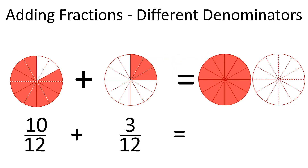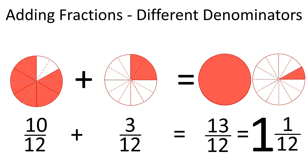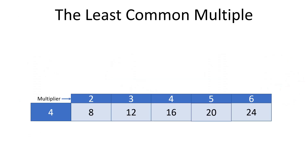And that we can write as a mixed number of one and one-twelfth. To find a common denominator, we have to find what is known as the least common multiple.